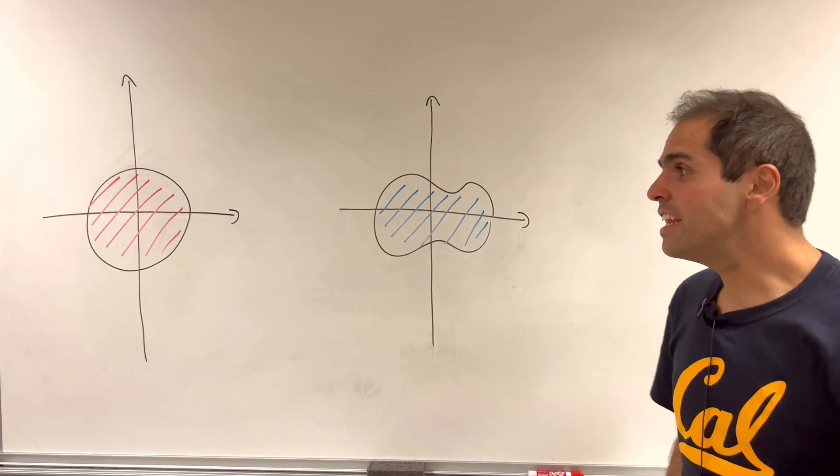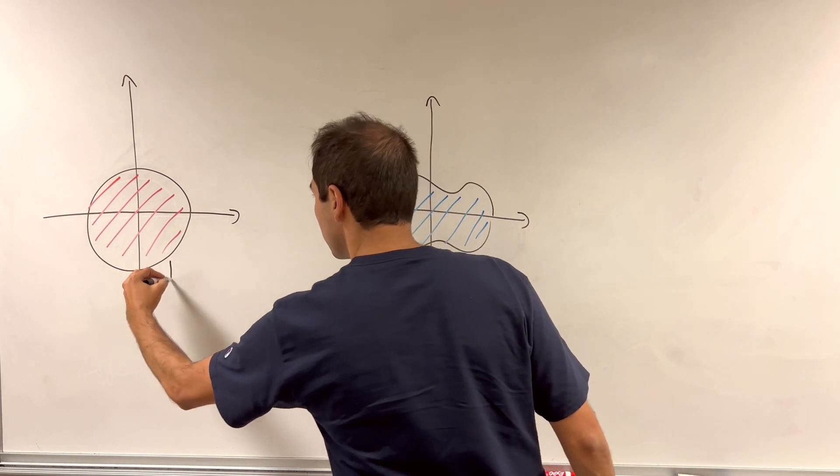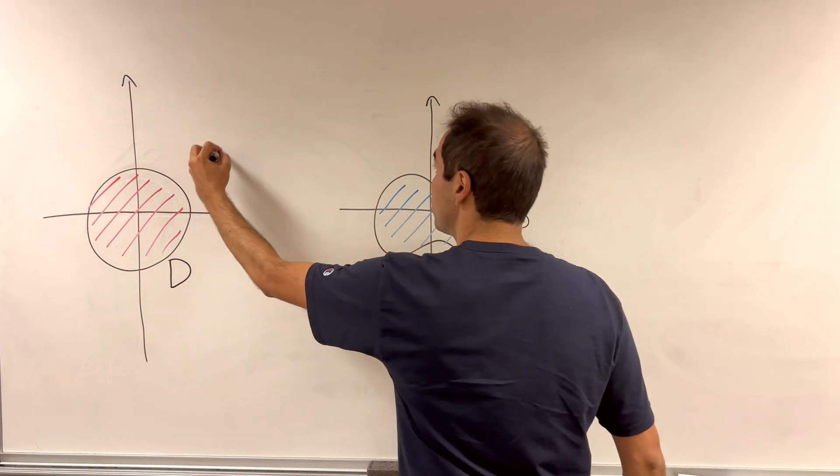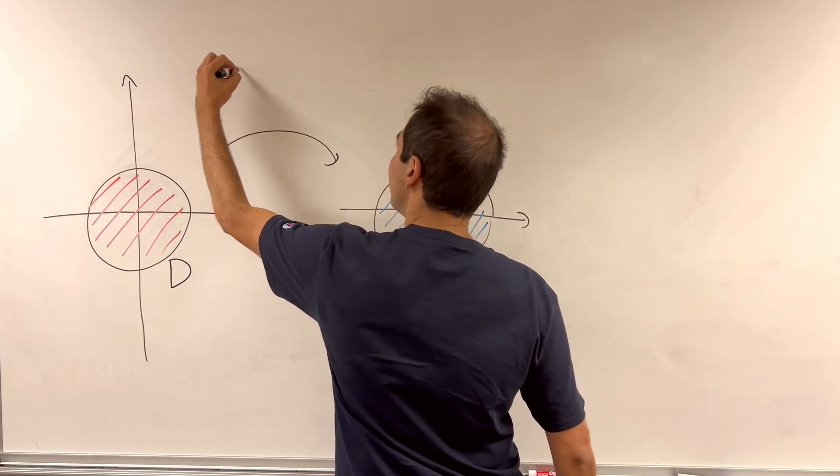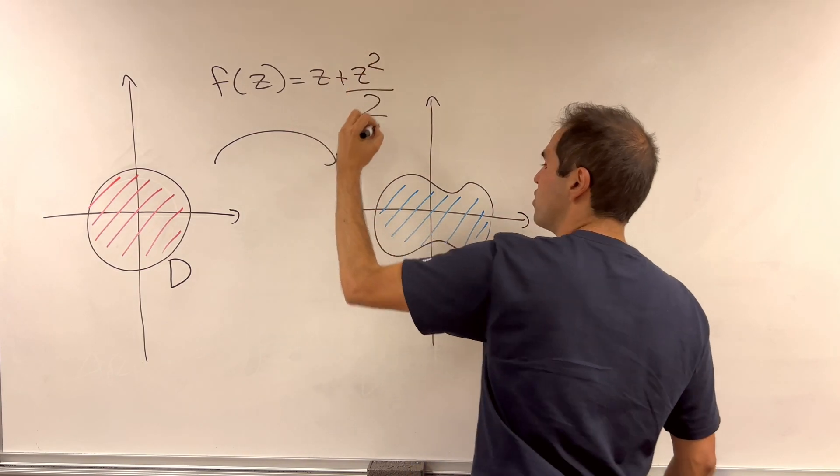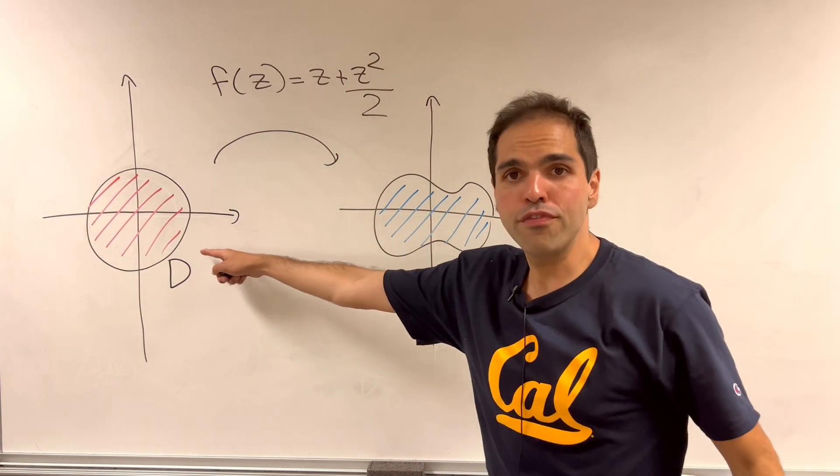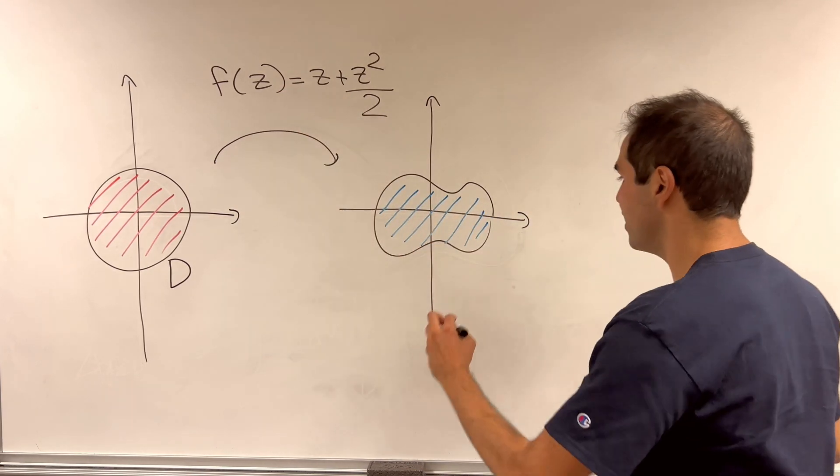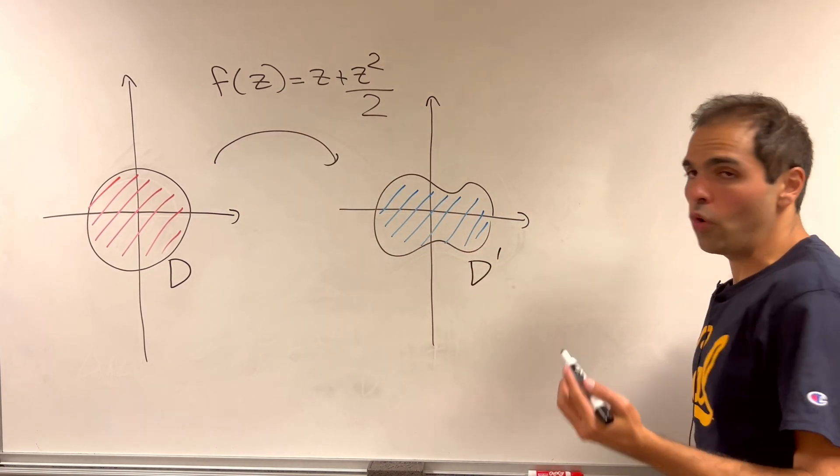And really what it is, it's the image of the unit disc D under the mapping f of z equals z plus z squared over 2. So if you start with the unit disc and you apply this function to it, then you get the Neumann oval.